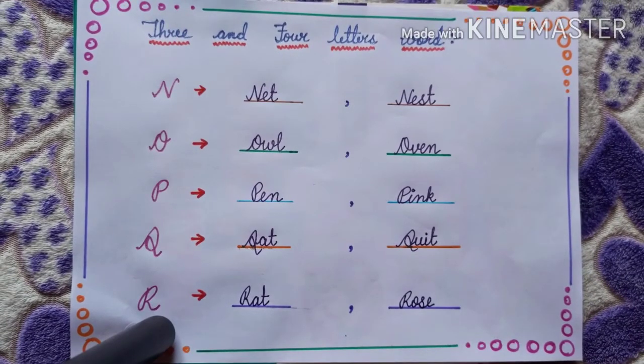Let's recap once again. N — N, E, T — net. N, E, S, T — nest. O — O, W, L — owl. O, V, E, N — oven.